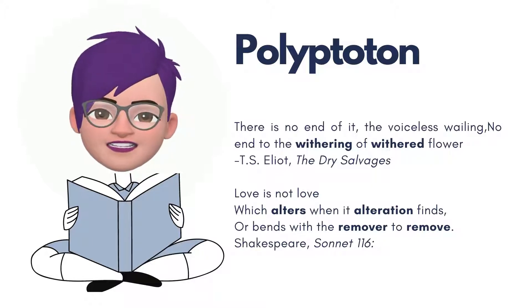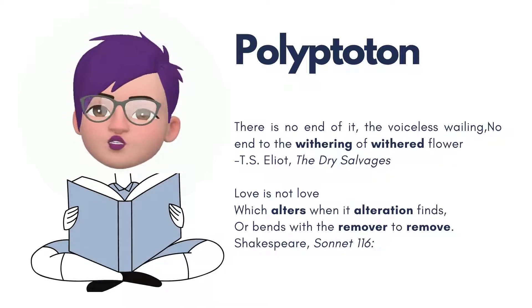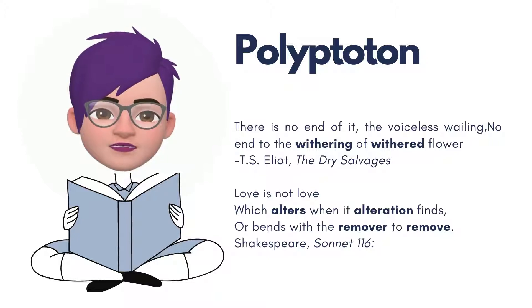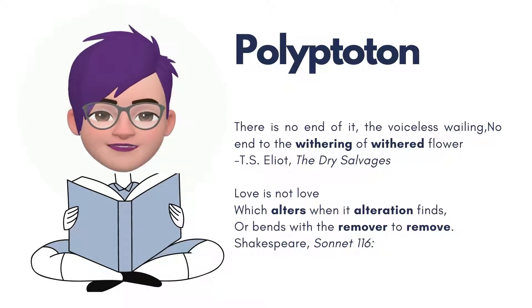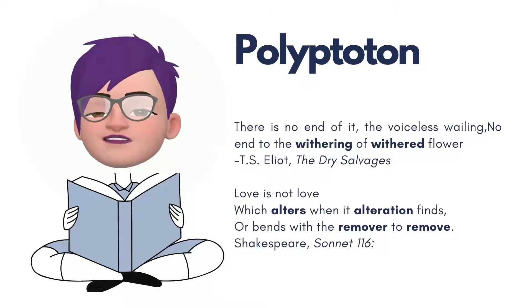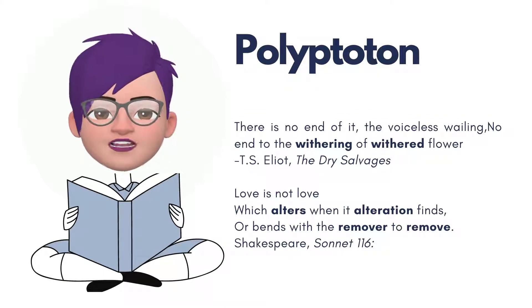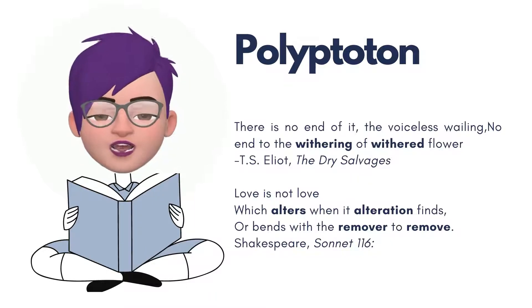Polyptoton is a figure of speech that involves the repetition of words derived from the same root, such as 'blood' and 'bleed,' or the question 'who should watch the watchman?' — which includes both 'watch' and 'watchman,' derived from the same root word. Depending on context, polyptoton can offer writers a variety of effects: emphasis, contrast, change, or connection. For example, in 'The Dry Salvages,' T.S. Eliot writes: 'There is no end of it, the voiceless wailing, no end to the withering of withered flowers.' Or perhaps the iconic Shakespearean lines: 'Love is not love which alters where it alteration finds, or bends with the remover to remove.' Here, 'alters' and 'alteration,' and 'remover' and 'remove' are words from the same root used in quick succession.